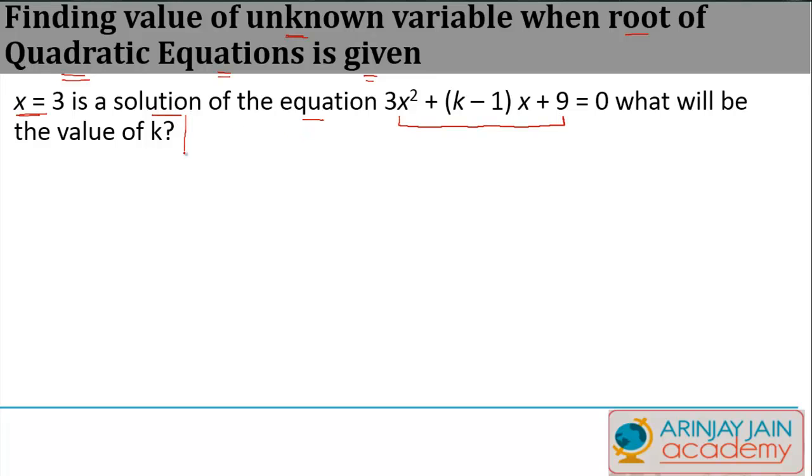What does this mean? This means that if x = 3 is a solution of the equation, when we put in the value of 3 in this equation, it should be equal to the right-hand side, which is 0. So all you need to do in this particular case is to just put in the value of x = 3.